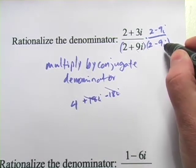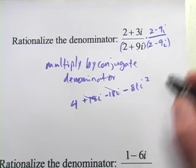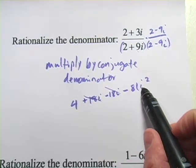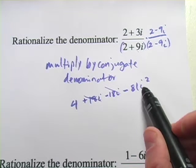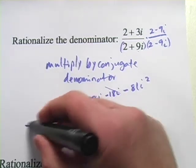Finally, our last term, we have 9i times a negative 9i. That's a negative 81i squared. But remember, i squared is equivalent to negative 1. So negative 81 times a negative 1 is a positive 81 plus 4. Our denominator now is 85.